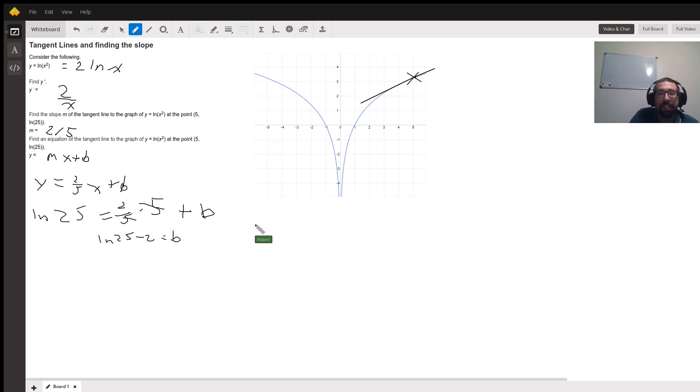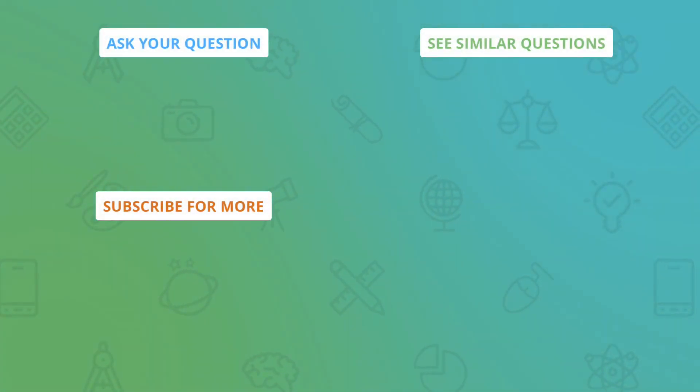So the final answer would be y equals 2 fifths x plus ln 25 minus 2. And some people use what's called the point slope form. I'm not a fan of point slope form, but if that's what you like, you could do that instead of this last part.